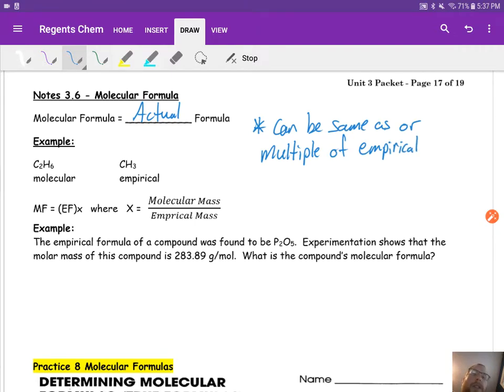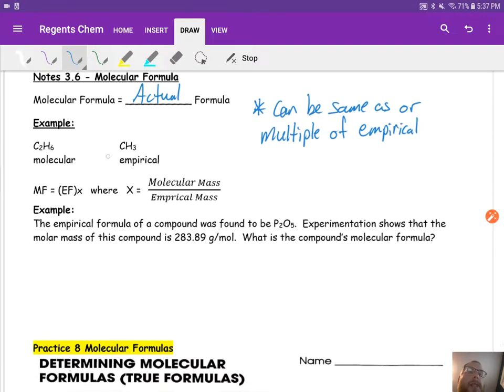If you're not sure exactly what multiple means, let's take a look at this example. CH3 is the empirical, it's the lowest whole number ratio. A molecular formula, a possible molecular formula for having that empirical could be C2H6, where we just multiplied each subscript by two. We could say C3H9, same idea.